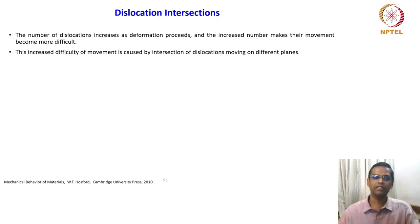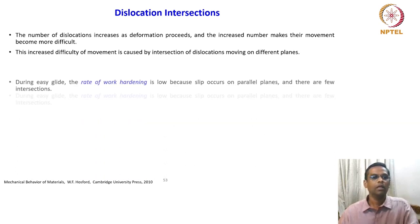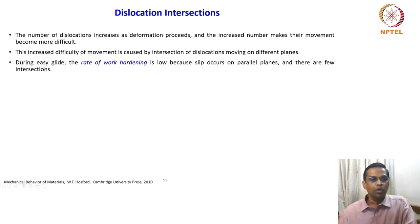In a wavy slip material, the dislocation moves freely in three dimensions. So when the density of dislocations increases, they will obviously encounter other dislocations. As the number of dislocation lines per unit area increases, difficulty arises in terms of motion. During easy glide, the rate of work hardening is low because slip occurs on parallel planes and there are few intersections.